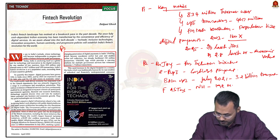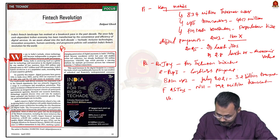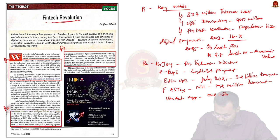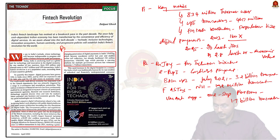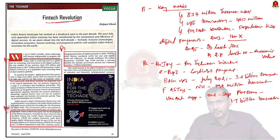The UMANG app — Unified Mobile Application for New Age Governance — provides a one-stop platform. It has witnessed around 1.7 billion transactions. Most union and state government departments provide services through UMANG, including fee payments. These are data points that show fintech in India has great potential and what has been achieved until 2021.